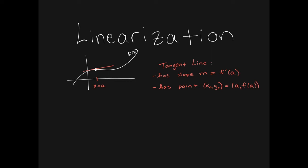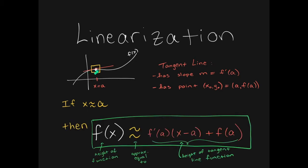In this video, we're going to talk about linearization. The concept of linearization is the following: if my x values are very close to a, then I can zoom into a small box that's very close to the point of contact. Inside this box, where the x values are very close to a, the height of the function is approximately equal to the height of the tangent line. The height of the tangent line is given by the equation of the tangent line, which is the expression on the right-hand side.